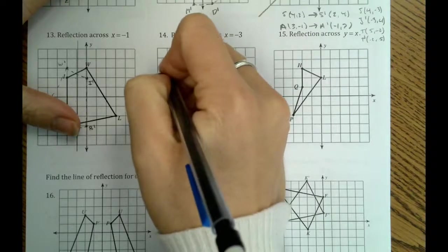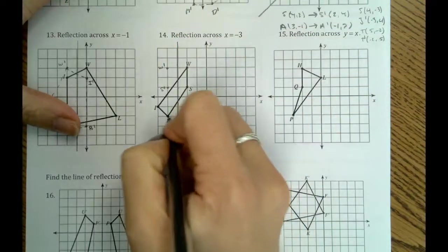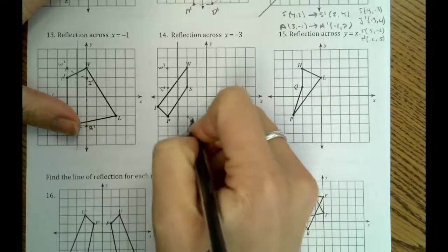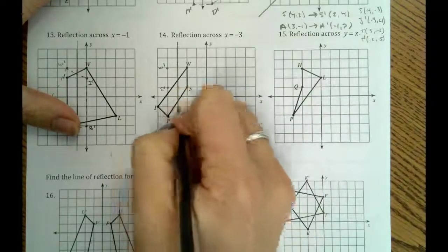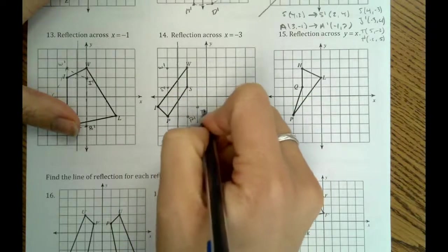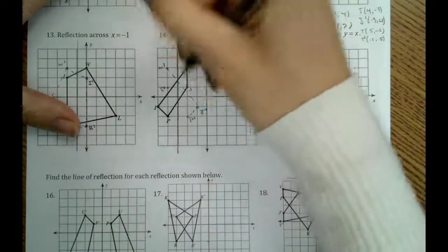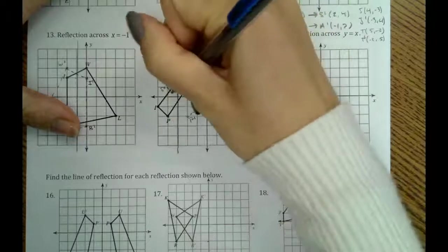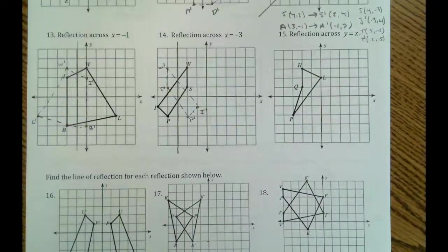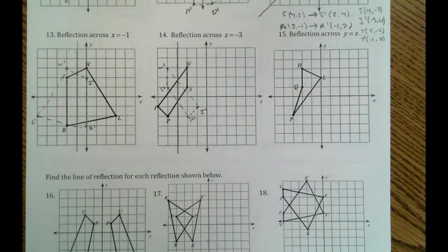p is 1 away, so we go 1 away on the opposite side. And i is 2 away, so we'll go 2 away on the other side. So you can see we're reflected over our line of x equals negative 3.